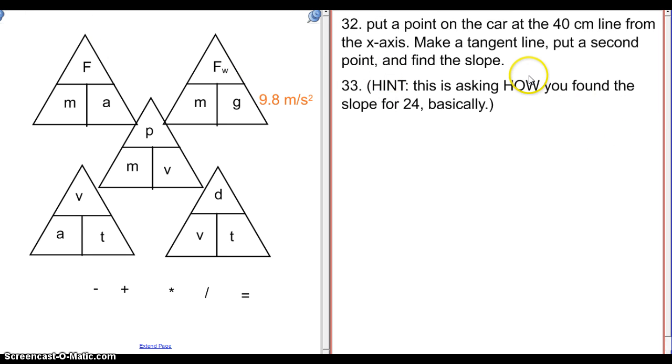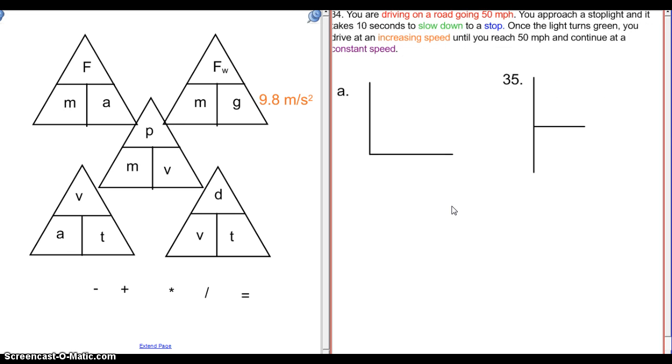So then you need to find the instantaneous speed, so you would put a point on the line at the 40 centimeter line there from the x-axis. You would go from the x-axis, you'd go up to the 40 centimeter line, you'd put your point, and then you make your tangent line, and you put a second point and find the slope. For number 33, if you go back to question number 24, I'm asking you to give me the directions for how you solve for something.